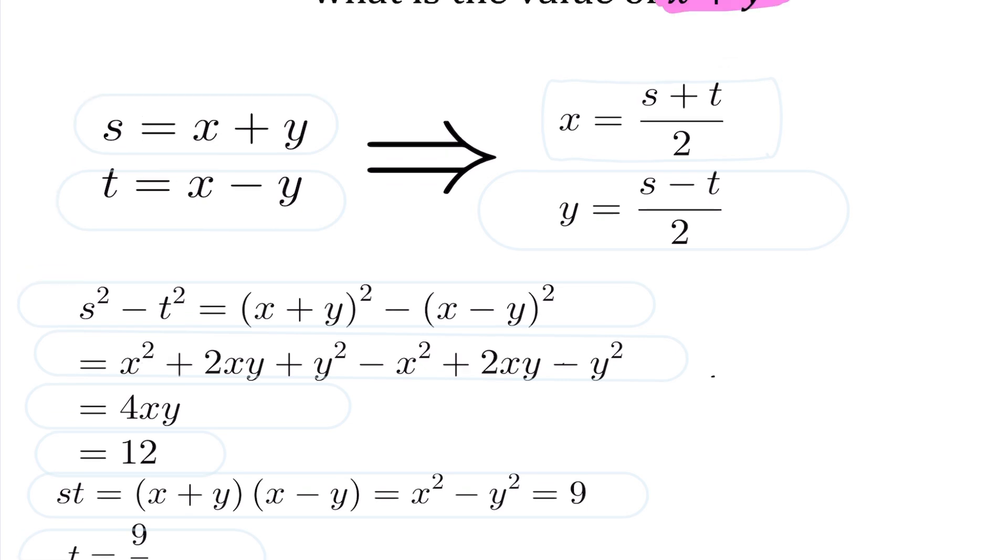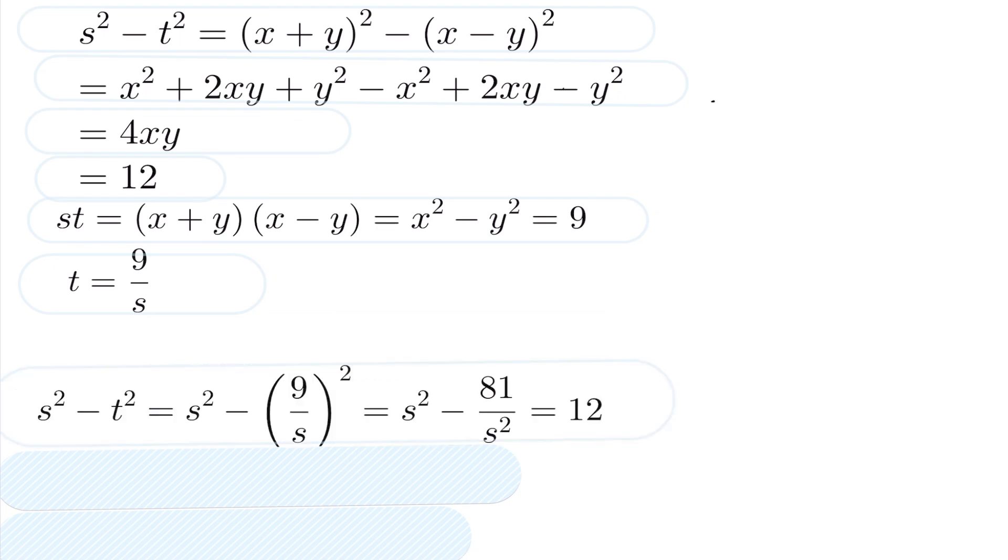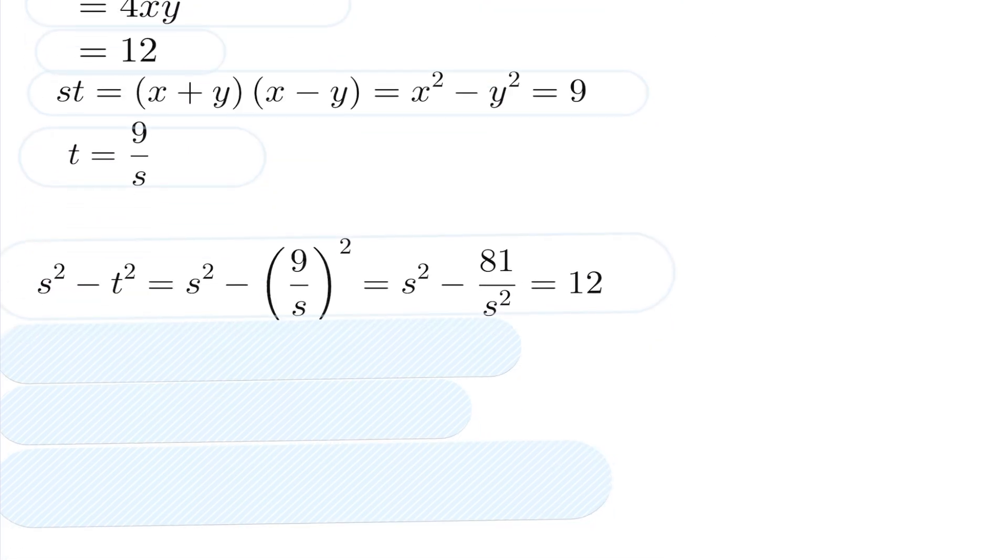So the idea here is we're trying to get this down to one variable. I'm in a situation where I know that s squared minus t squared is equal to 12, and I also know that t is equal to 9 over s. So I can go ahead and substitute that into this equation. That will give us the following: s squared minus t squared, I can get rid of that t and change that to a 9 over s quantity squared, expanding out, and I know that's equal to 12.